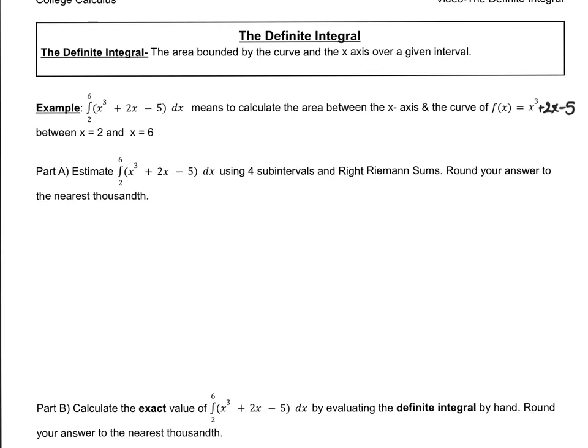So part A says to estimate this area using four subintervals and a right Riemann sum. So this is review. So what I'd actually like everyone to do right now is pause the video and do part A, round your answer to the nearest thousandth, and then hit resume when you're ready for the answer.